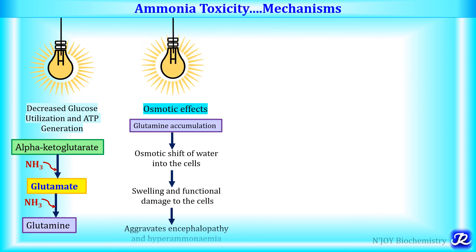The second mechanism is osmotic effects due to glutamine accumulation. There is increased formation of glutamine in brain cells, which leads to an osmotic shift of water into the cells, resulting in swelling and functional damage to the cells, which aggravates encephalopathy and hyperammonemia.